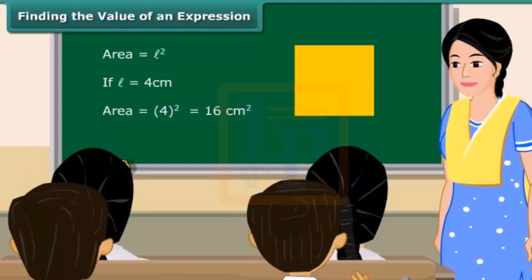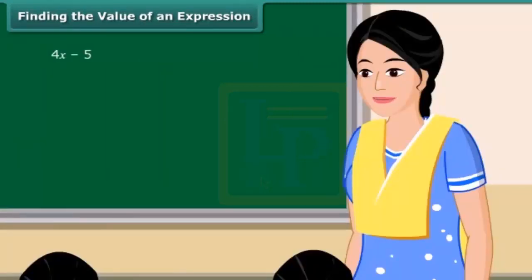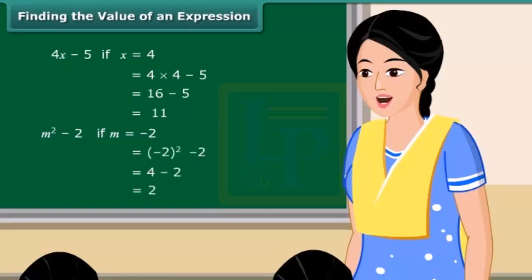Consider the expression 4x minus 5. If the value of x is equal to 4, then the given algebraic expression is equal to 4 into 4 minus 5, which is equal to 16 minus 5, that is 11. Similarly, if m is equal to minus 2, then value of the expression m square minus 2 will be equal to 2.